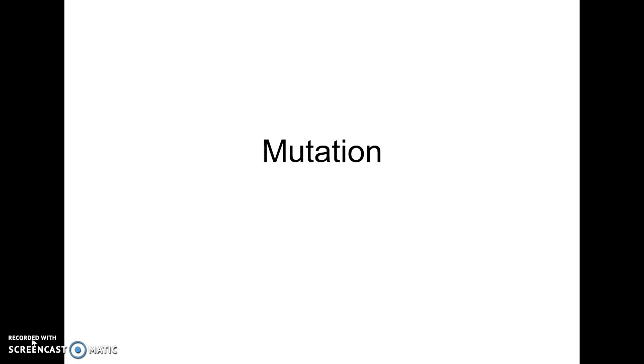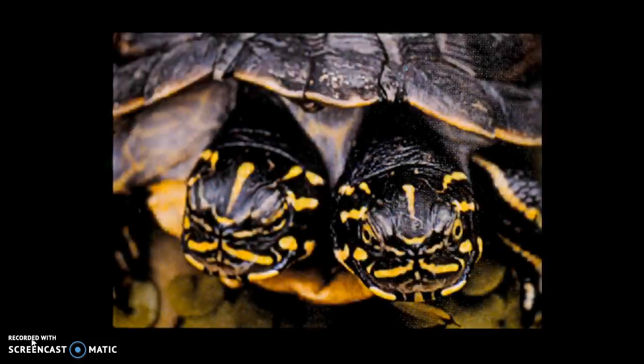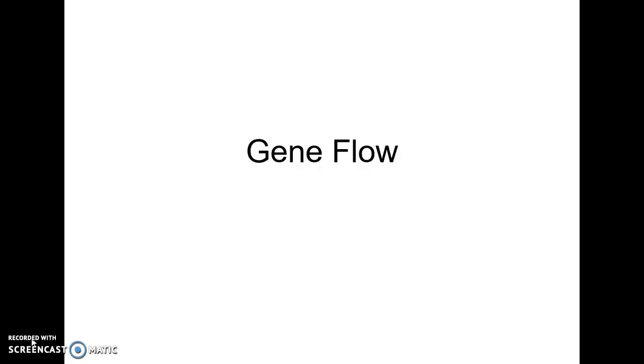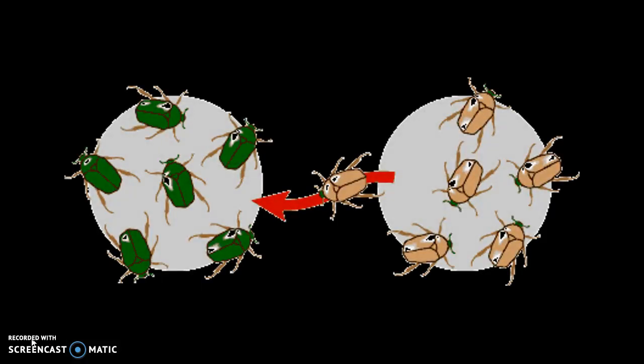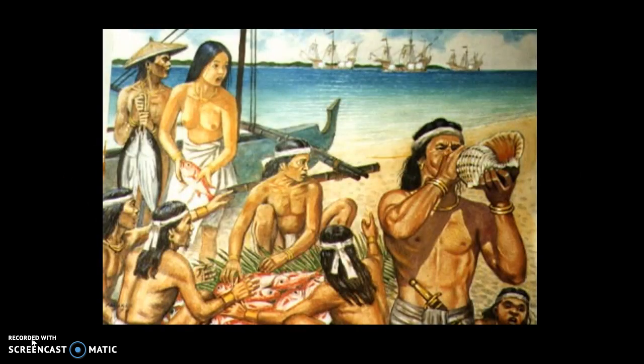Mutation is a change in the DNA. It's the only way that new variation can be introduced, and mutations are very rare. Gene flow is the exchange of genes between populations. Most animals choose their mates from outside of close family groups, and when individuals move into new areas, gene flow increases variation within a population.